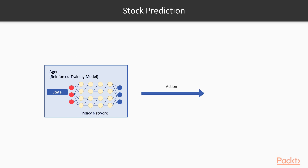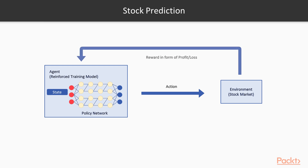The action will be to buy a specific stock or not to buy. Based on the state of the stock market, our deep learning neural network will produce an output that tells the algorithm to buy or not to buy. When we are buying, our environment — the stock market — will produce feedback. The feedback will be a reward in the form of profit or loss, which we can treat as a reward function as in previous sections.